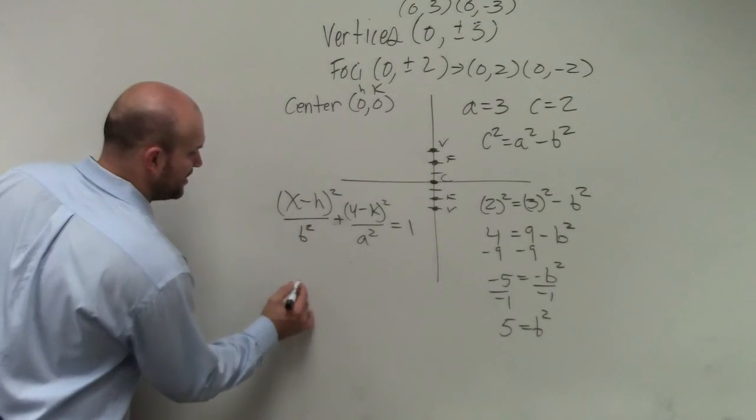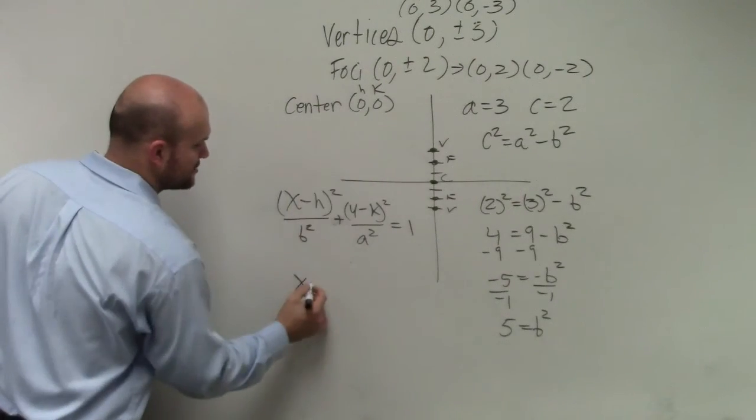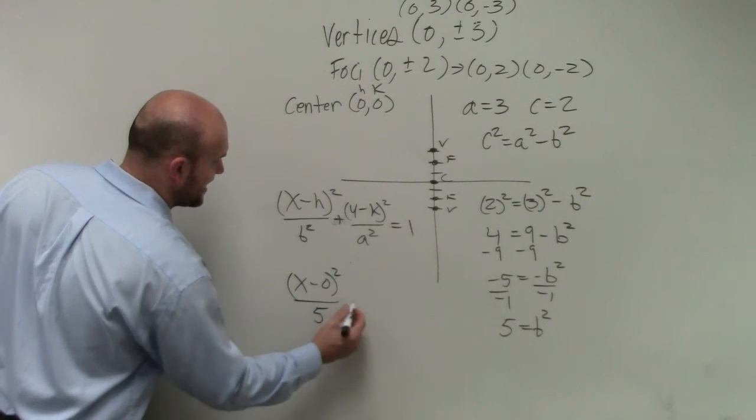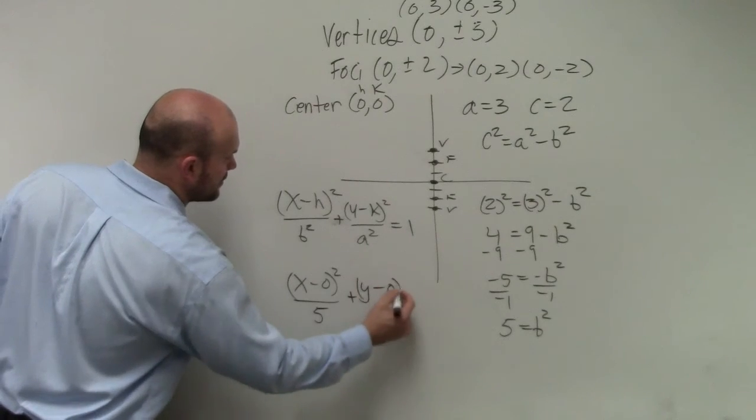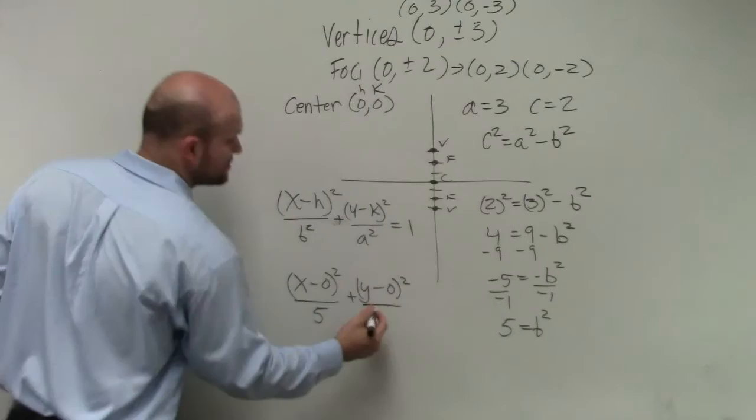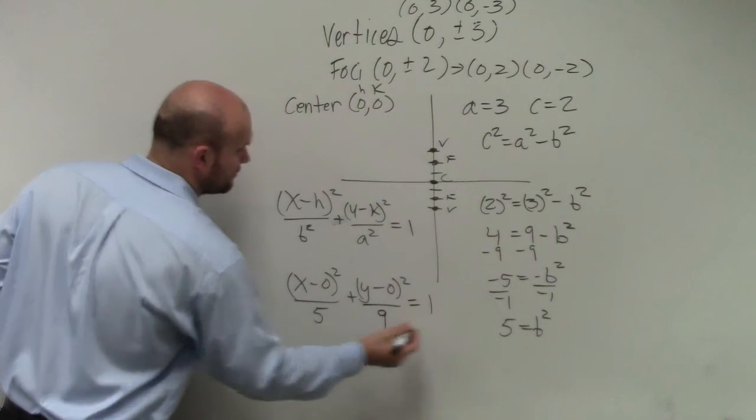So now I can just plug in h and k, which is x minus 0, squared over b squared, which is 5, plus y minus 0 squared over a squared. Now, in this case, a is 3. So a squared is going to be 9 equals 1.